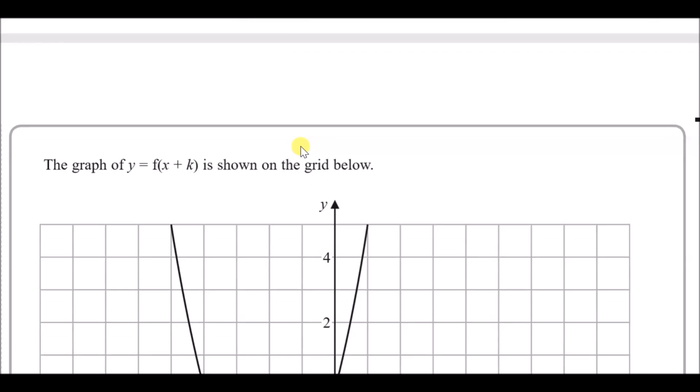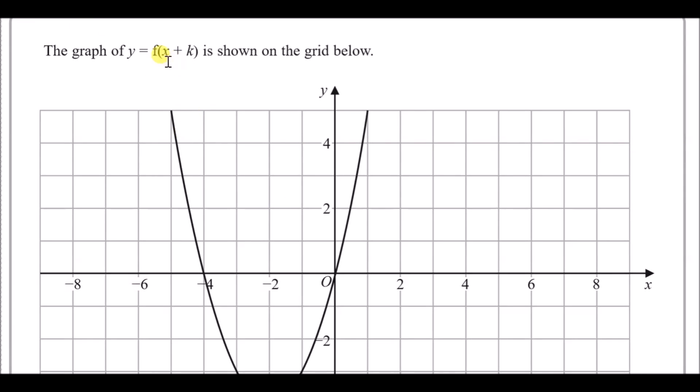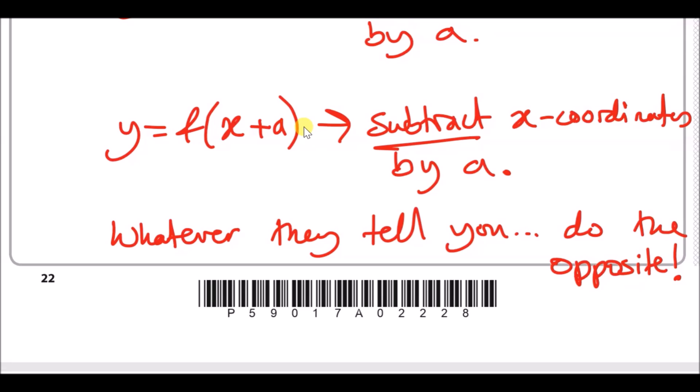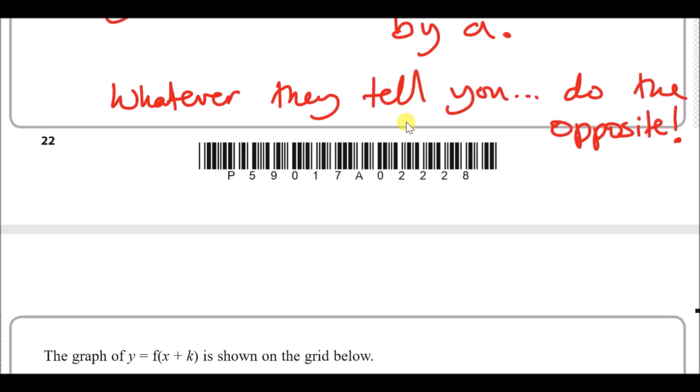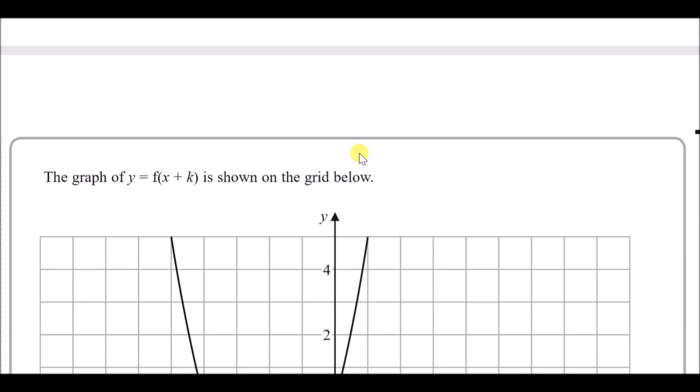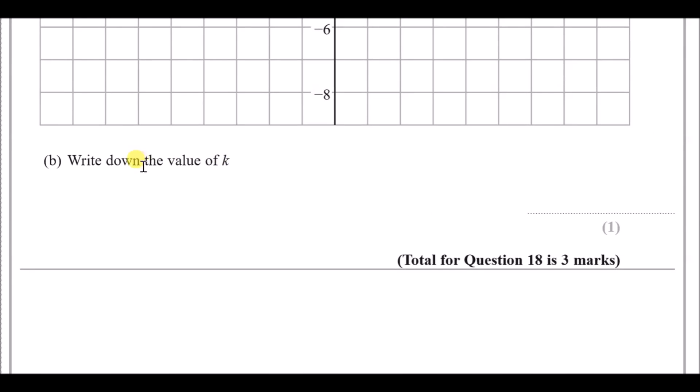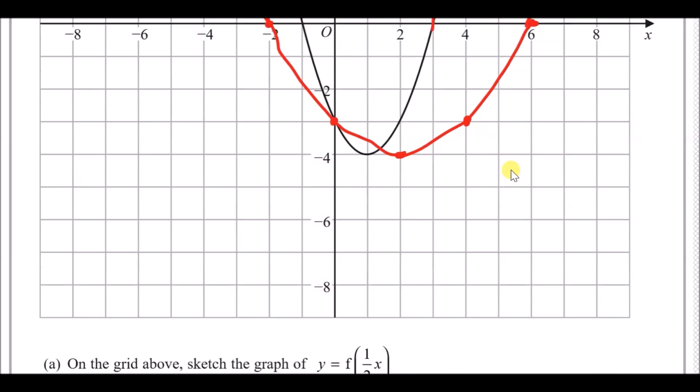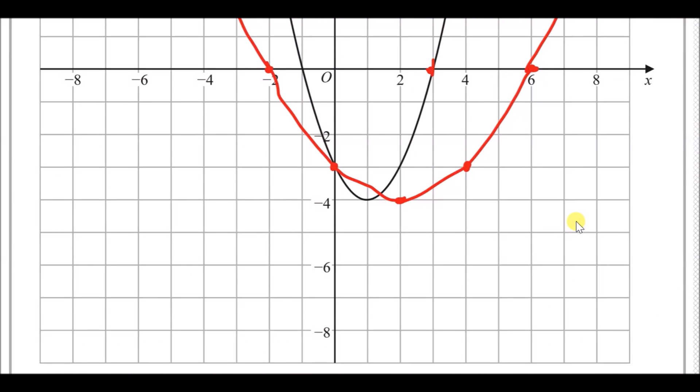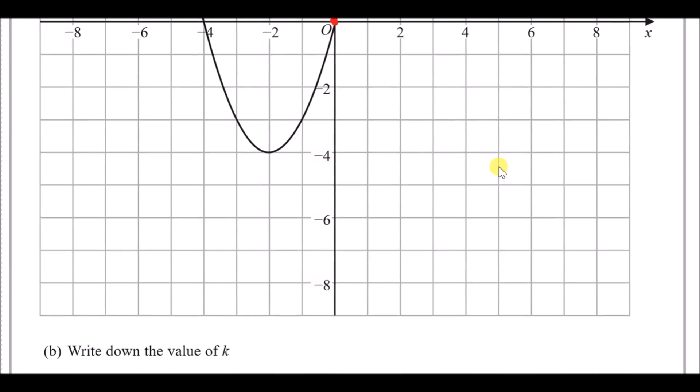Let's look at the next bit. So the graph of y equals f(x + k). So it's essentially what I said here. If it's x plus a, you subtract x coordinates by a. So subtract by k. So we can see that it's the same curve here. Write down the value k. Let's see where it moved. See how it got to zero. So it traveled from three. So it moved three across. So k is going to be three.